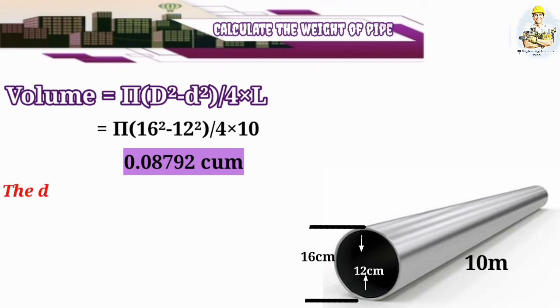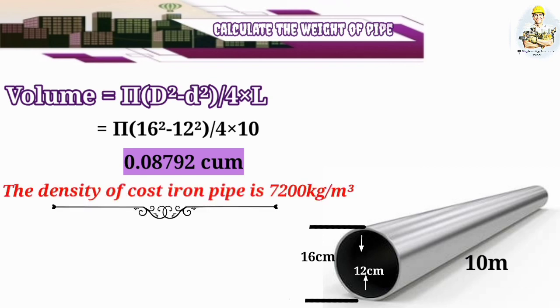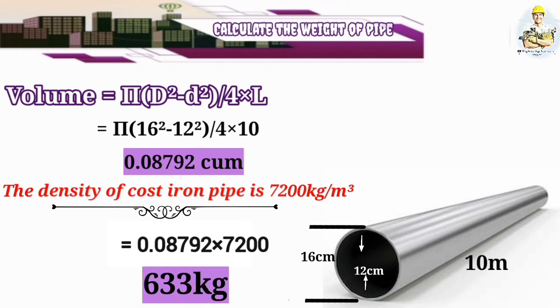As we know that the density of the cast iron pipe is 7200 kg per cubic meter. So if we multiply 7200 with 0.08792, you can get the answer 633 kg.